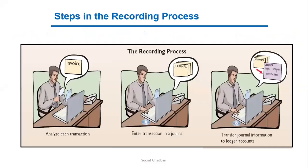First, we start with the steps in the recording process. The first step is to analyze each transaction, which means to provide evidence of the transaction. Once we have the evidence, we have to show the impact of each transaction on different accounts using the debit and credit procedures. The third step is to transfer journal information to ledger accounts, which means to have a balance for each account, whether it's debit or credit.